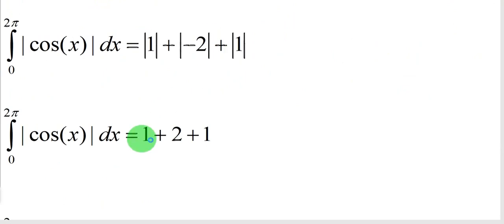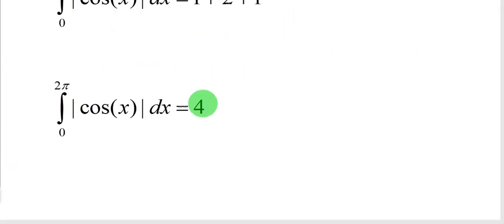But when we take the absolute value of all those, we get positive 4 back, which gives us the area under the curve of the absolute value of cosine of x from 0 to 2π.